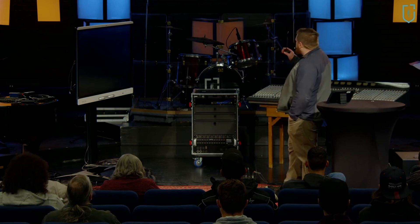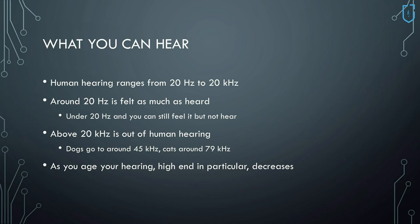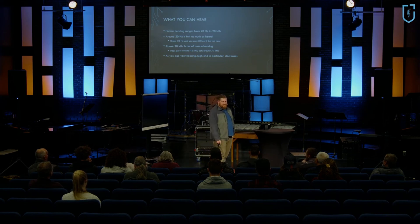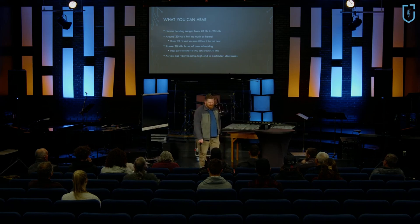We hear from 20Hz to 20kHz as a good average. When we get down to 20Hz and under — while we can't really hear 10Hz — you do get harmonic frequencies, so you'll hear something, but you'll mainly feel it because the sound waves are just massive. Above 20kHz is out of our range, but dogs can hear around 45kHz and cats up around 79kHz so they can hear mice in walls. As you age, your high-end hearing in particular will decrease — I'm starting to notice it myself, which is kind of sad.